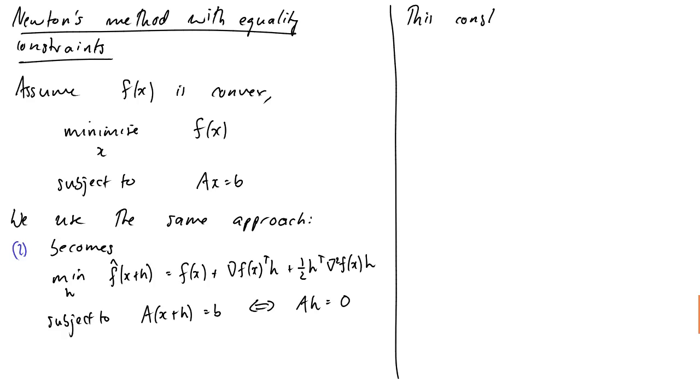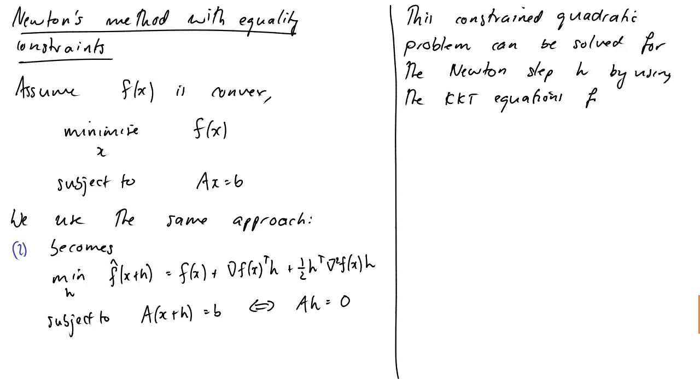Okay. So we can find our step H by solving an EQP by, for example, the KKT method. So this constrained quadratic problem can be solved, can be solved for the Newton's dip by using the KKT equations for an EQP.